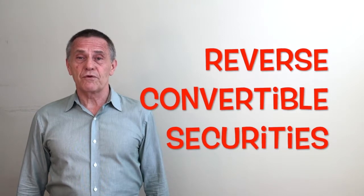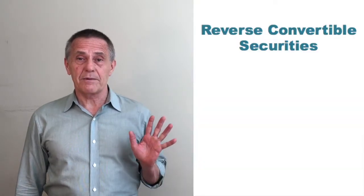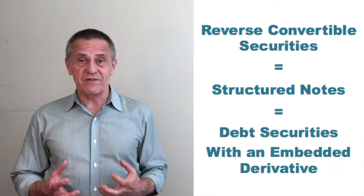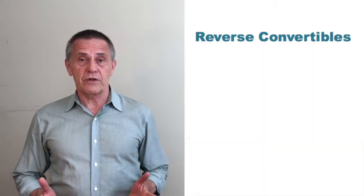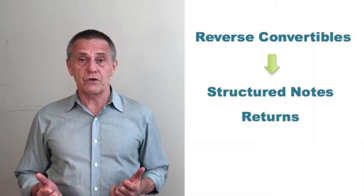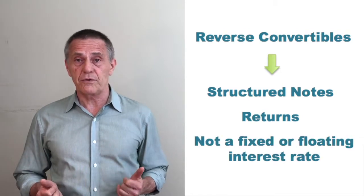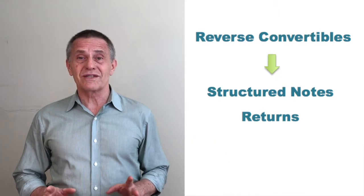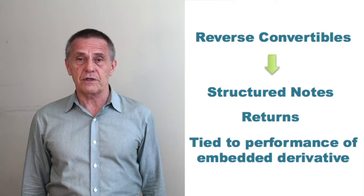So what is a reverse convertible security? A reverse convertible security is a type of structured note, which is a debt instrument that has a derivative buried inside of it. And unlike the typical debt instrument where the investor is expecting to get a return tied to some rate of interest, be it fixed or floating, on structured notes the return to the investor is tied to the performance of the derivative that's embedded inside of the security.